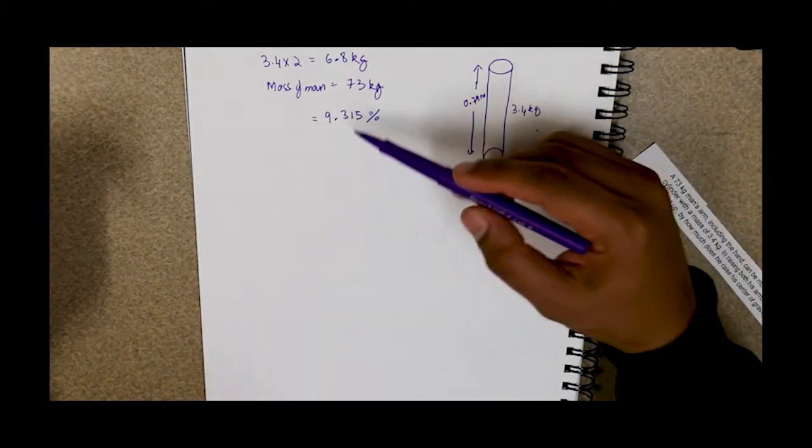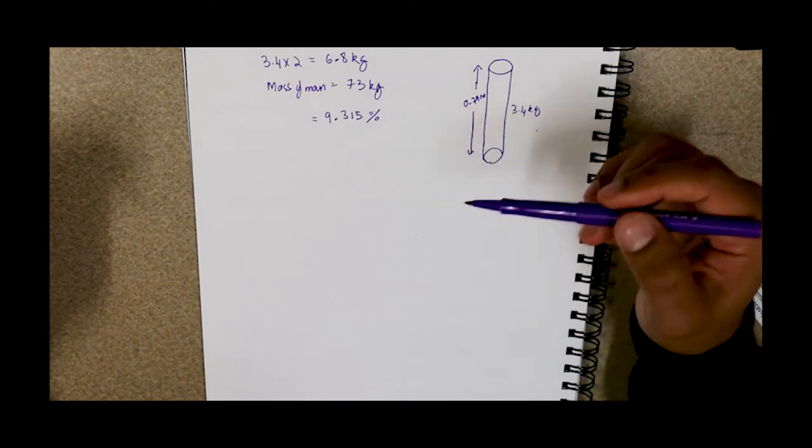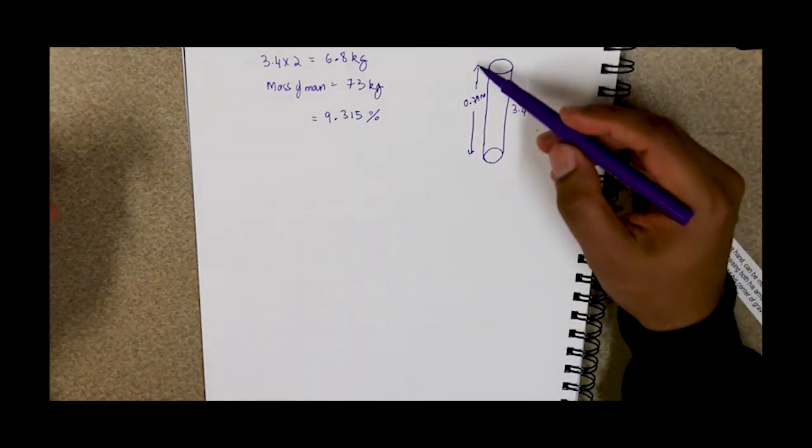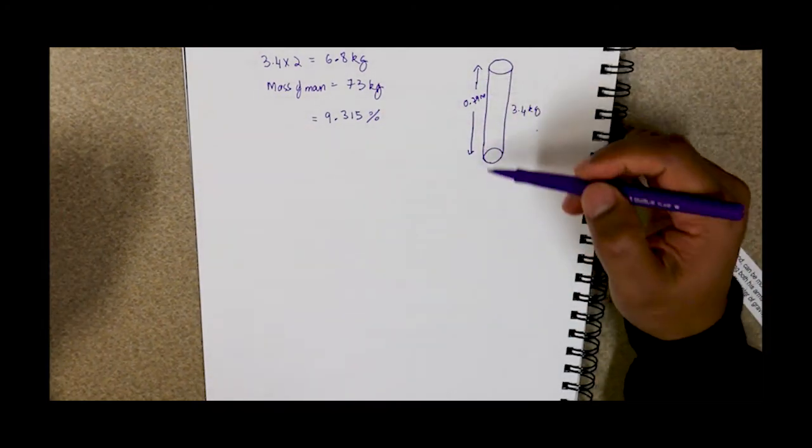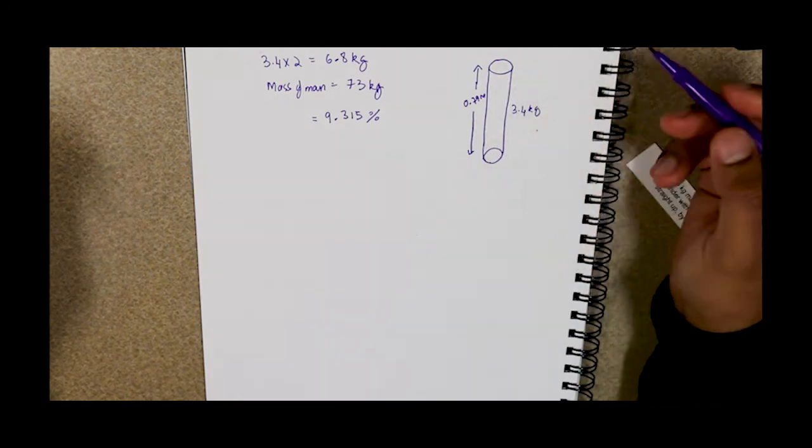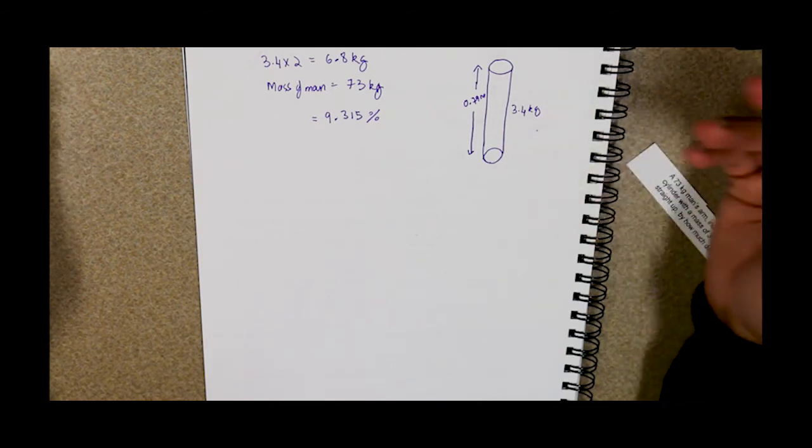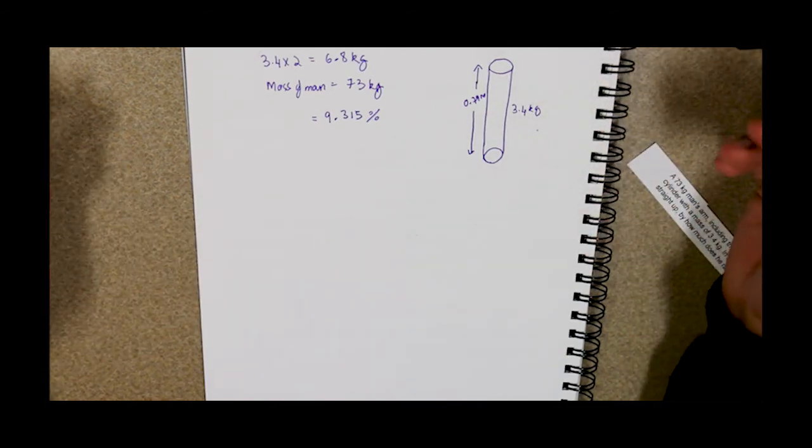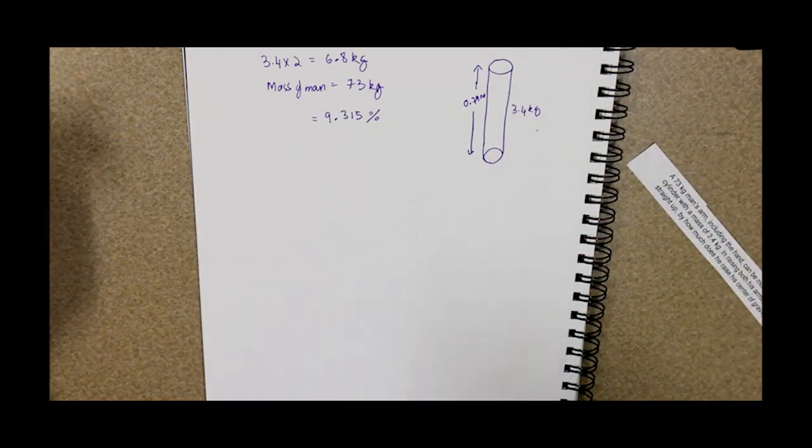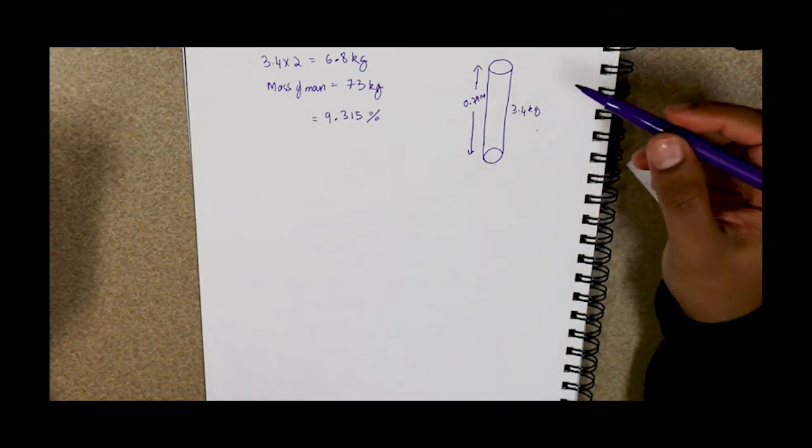We know the mass percentage of his arms. We multiply that by the height of his arms. Because the height of his arms essentially is the height at which his center of gravity will be raised because his arms will be above his shoulders.